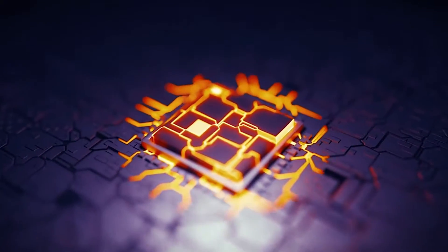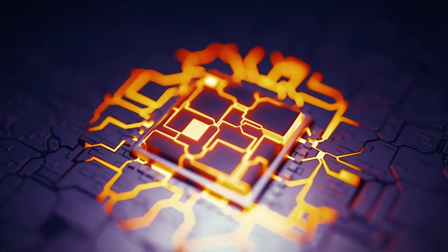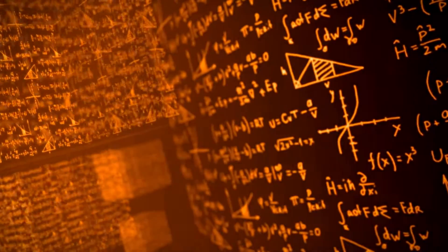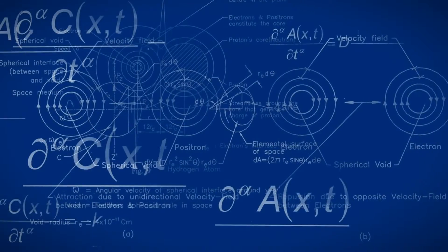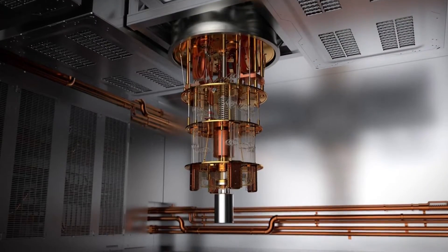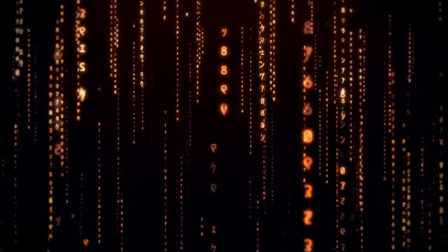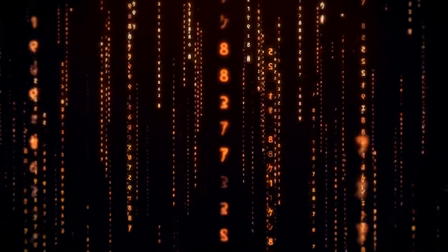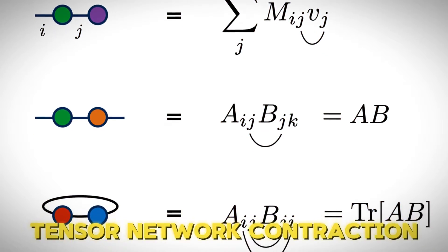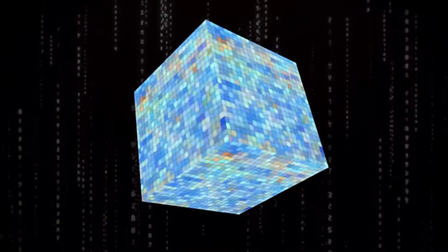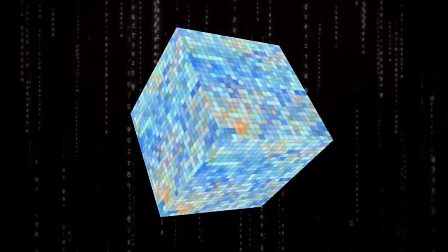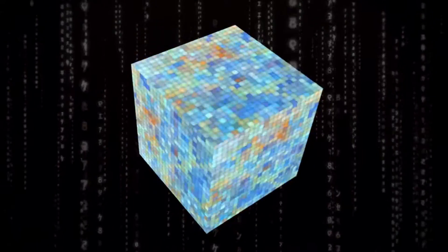Quantum computing is a powerful but challenging way of using quantum physics. It can solve some problems faster than classical computers, but it also has many limitations. What if there is another way of computing that can compete with quantum computing in some tasks? This is tensor network contraction, a technique that uses networks of tensors to handle high-dimensional data.